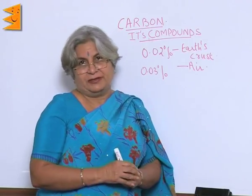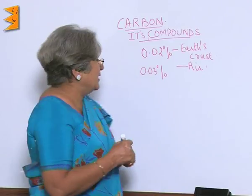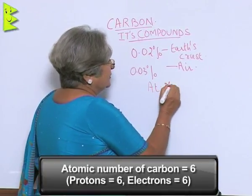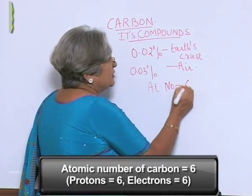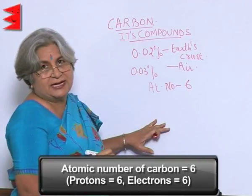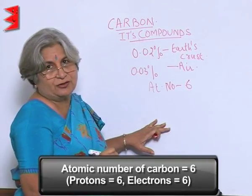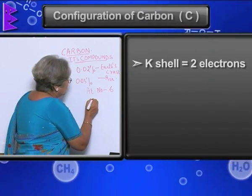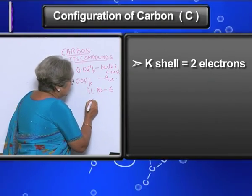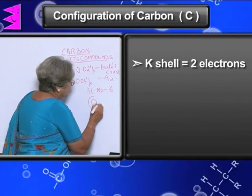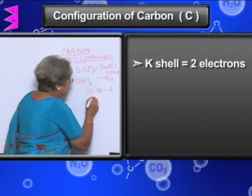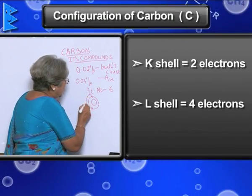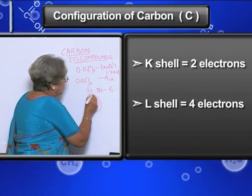Now let us take the case of carbon. Carbon has atomic number 6, which means there are 6 protons and 6 electrons. Its configuration is 2 electrons in the K shell and 4 electrons in the L shell.